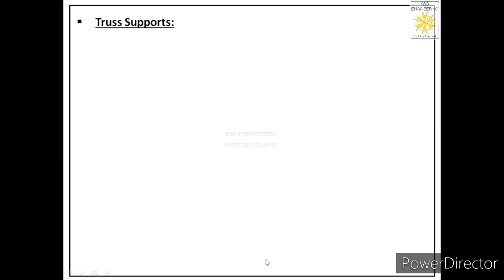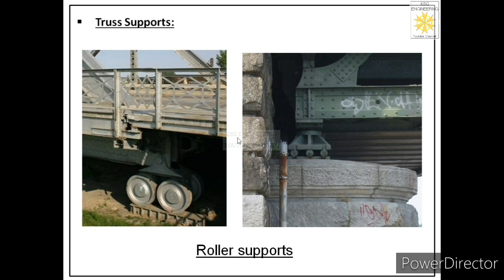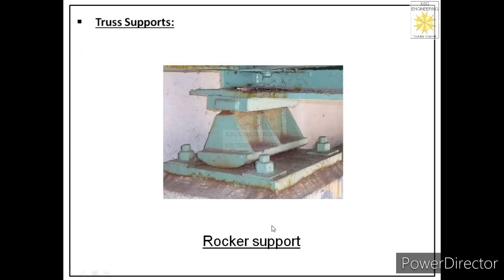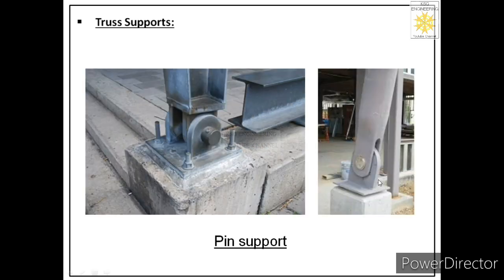Now let us understand about truss supports. In unit one when we discussed equilibrium, we learned about different types of body constraints including roller supports, rocker supports, and pin supports. Roller supports are used at one end of trusses to allow thermal expansion. Similarly we use rocker supports. Normally in a truss we use a pin support at one end and a roller support on the other end to allow thermal expansion.